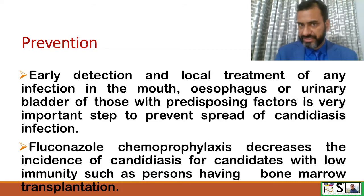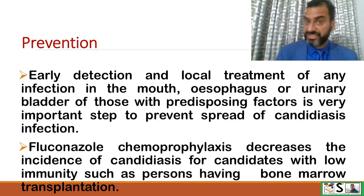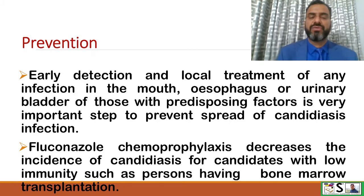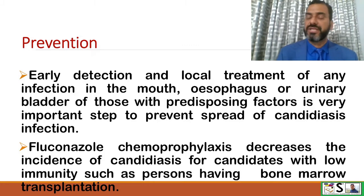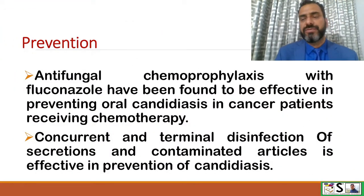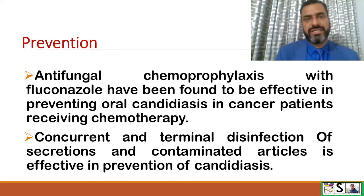How can candidiasis be prevented? Early detection and local treatment of any infection in the mouth, esophagus, or urinary bladder, or in those with predisposing factors, is very important to prevent the spread of candidiasis. Fluconazole chemoprophylaxis decreases the incidence of candidiasis in candidates with low immunity, such as persons having bone marrow transplantation. Antifungal chemoprophylaxis with fluconazole has also been found effective in preventing oral candidiasis in cancer patients receiving chemotherapy.